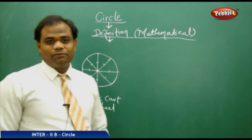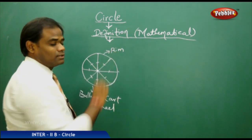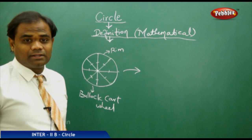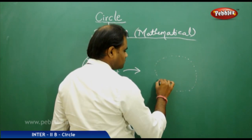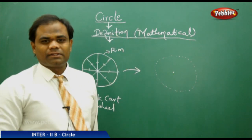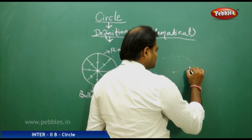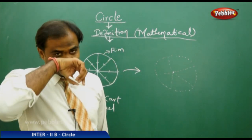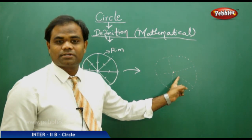So the concept of a wheel having equal sticks from the center to the rim is what defines the circle in a mathematical sense. Taking the bullock cart wheel as our model, we say that a circle is the set of points in a plane which are equidistant from a fixed point. If I take the center as the fixed point, then each of the points on the rim are equidistant from it — any point I take from the fixed point to the rim is equidistant.